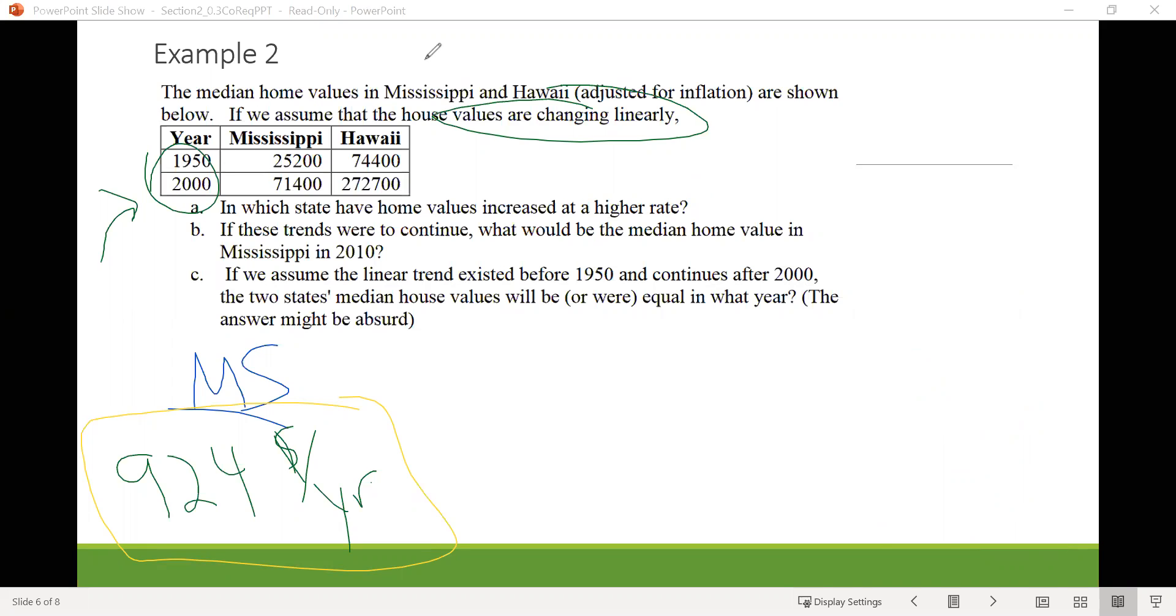Now this is an example of a problem where we should try to set up an equation. And since we know we're talking about linear equations, we'll use the F of X equals MX plus B. And we already know the value for M, right? We already calculated that. That's the 924. And we need to find the value for B. Normally we would pick a point, plug it in with the slope and solve for B, but I also maintain we actually already know this value. And what would this value be? That's gonna be the 25,200.